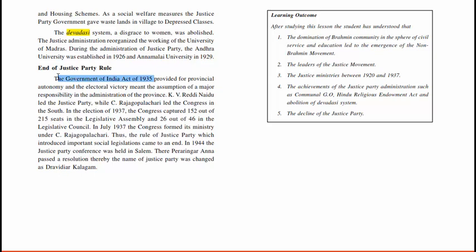The Government of India Act 1935 provided for provincial autonomy, and the electoral victory meant the assumption of major responsibility in the administration of the province. K.B. Reddy Naidu led the Justice Party while C. Rajagopalachari led the Congress in the South. In the election of 1937, the Congress captured 152 out of 215 seats in the Legislative Assembly and 26 out of 46 in the Legislative Council. In July 1937, Congress formed its ministry under C. Rajagopalachari. Thus, the rule of the Justice Party, which had introduced important social legislation, came to an end.